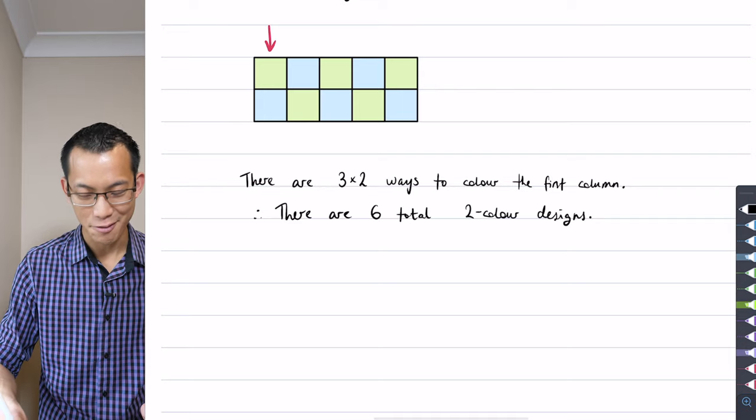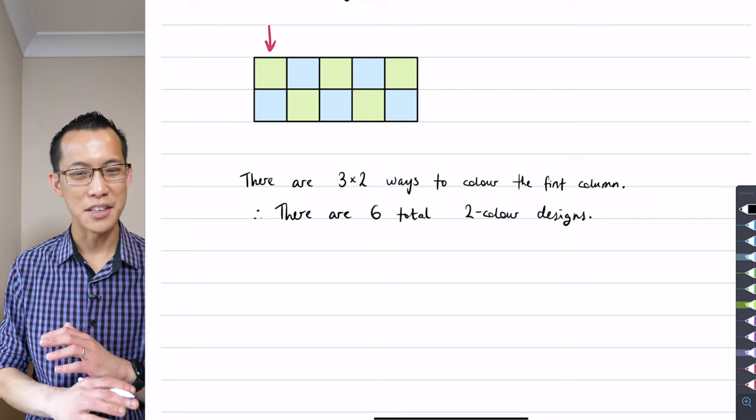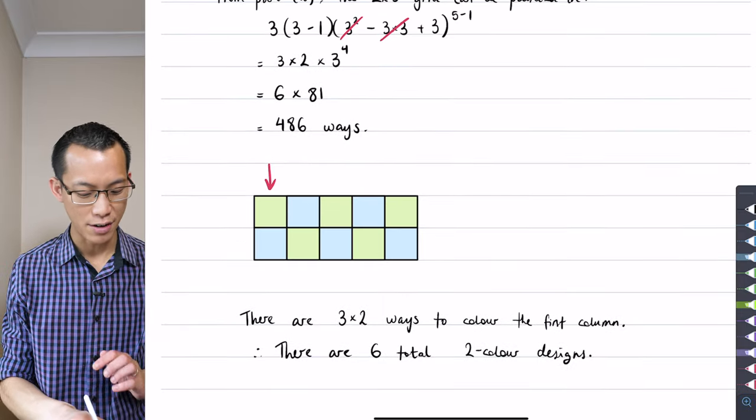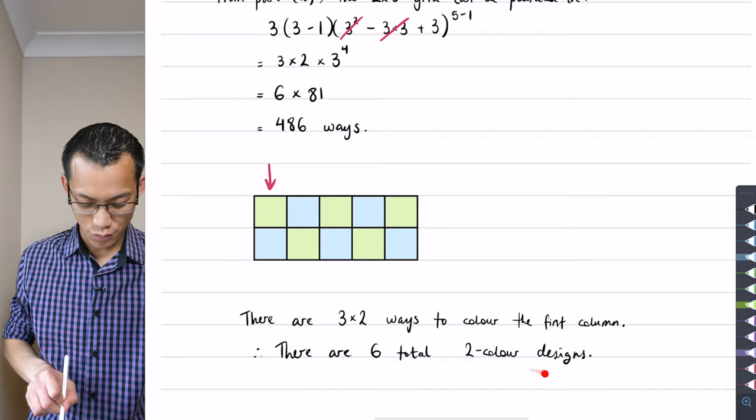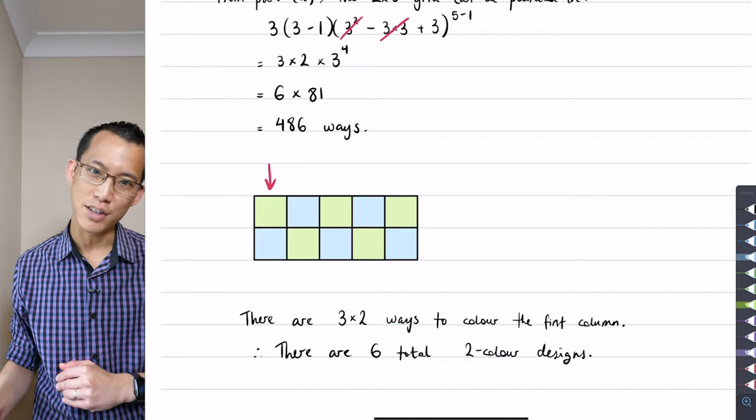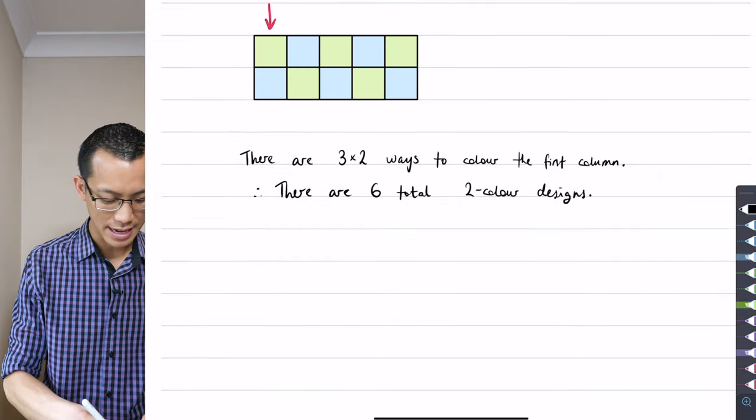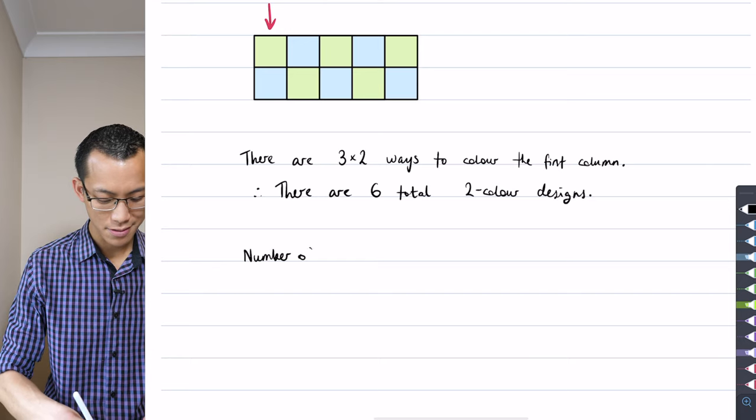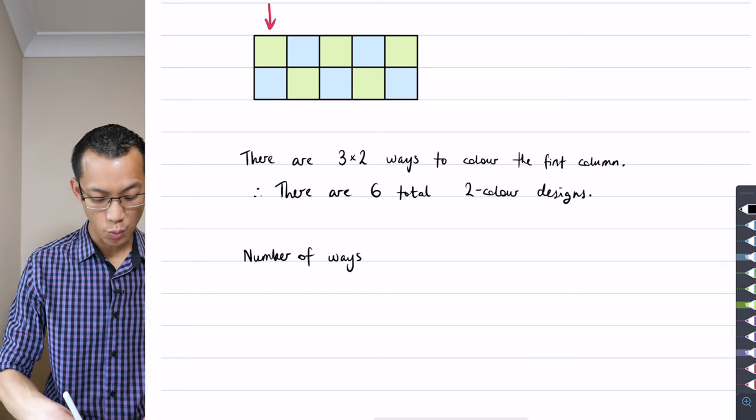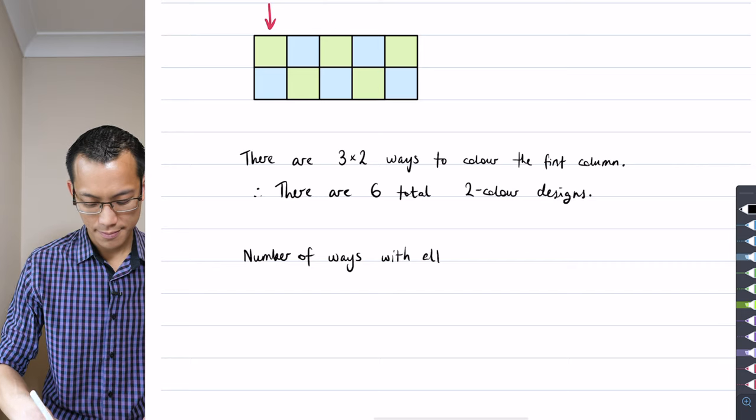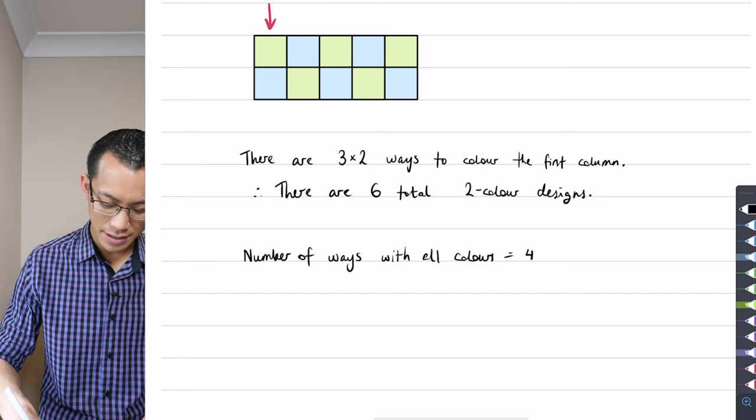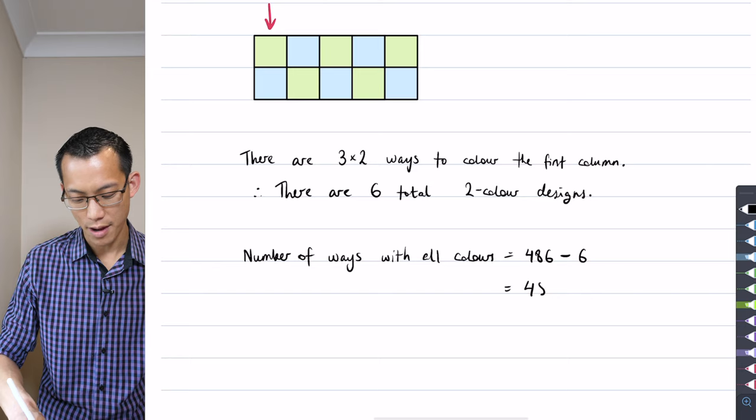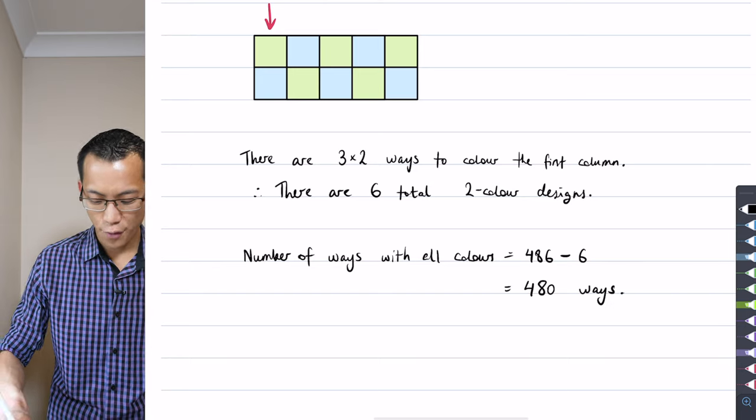And these are the ones which I'm not allowed to have because I'm supposed to have designs that use all of the colors all together so I just take my big number the 486 that I calculated right here and then I just remove these guys and everything that's left will need to use three colors so I'm going to say in conclusion number of ways with all colors is going to be equal to that 486 take away the six that I just calculated so that gives you this number right here full stop.